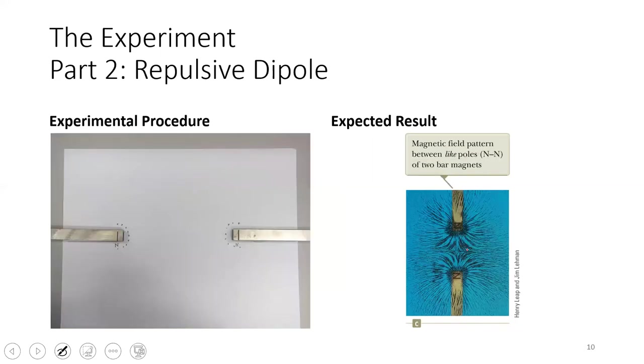Part two of the lab is to look at a repulsive dipole. Just like electric charges, like things repel while opposite things attract. Here in the picture to your left, you have two north ends of a dipole, of a permanent magnet, and what you will see as you map this out is that your field lines repel each other.